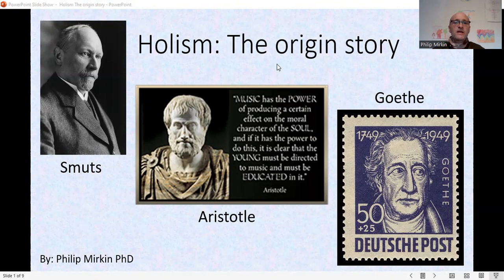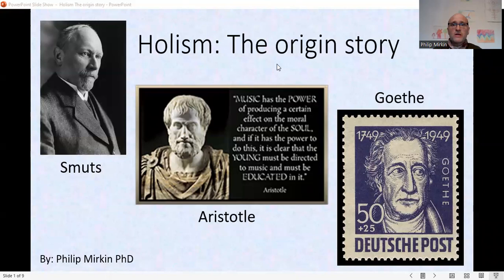In 1926, Jan Smuts wrote a book called Holism and Evolution, where he laid out his concept of holism, the first time this term was used. This video will tell you about the origins of how he came to that idea, as well as adding an idea of Goethe which was already there in some of the founding ideas of Smuts's thinking about holism, even though he himself didn't use it directly.